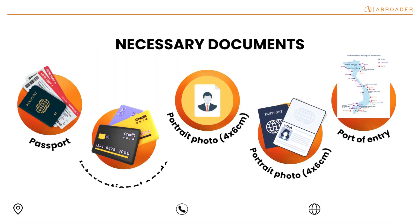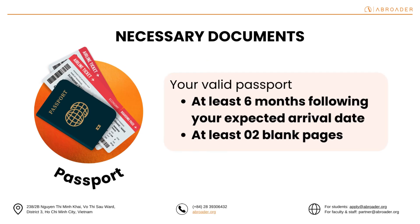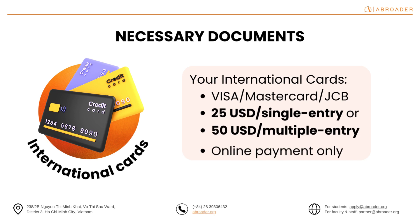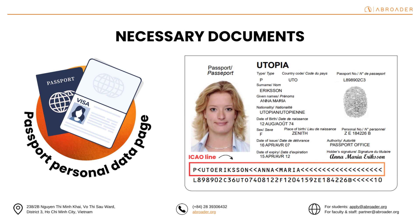Before preparing for your application, you will need to get these documents done. First, your valid passport for at least six months following your expected arrival date and has at least two blank pages. Second, international cards — Visa, Mastercard, or JCB — for the online payment of the e-visa fee, which is 25 US dollars per single entry or 50 US dollars per multiple entry. Next, an image of your passport's personal data page. Remember to keep the image full and clear — the full page including photo, personal information, and ICAO lines.